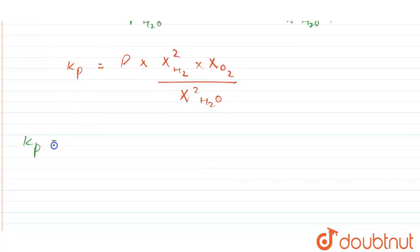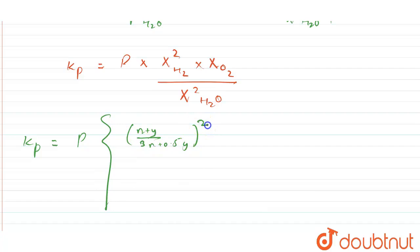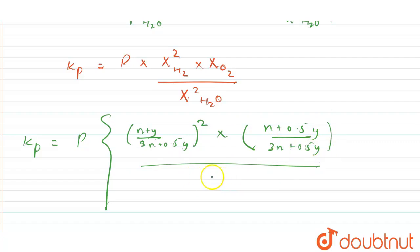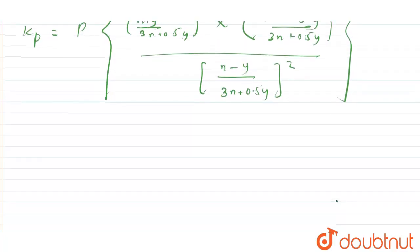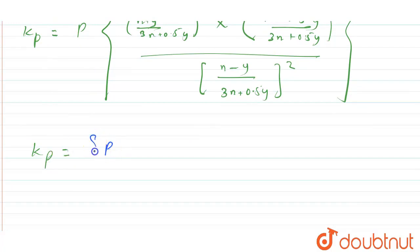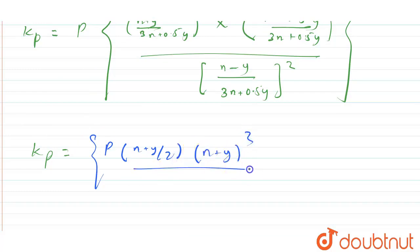Substituting the mole fraction values, taking p as common outside: Kp = p × [(n + y)/(3n + 0.5y)]² × [(n + 0.5y)/(3n + 0.5y)] divided by [(n − y)/(3n + 0.5y)]². After simplification this becomes Kp = p × [(n + y)²(n + 0.5y)] / [(3n + 0.5y) × (n − y)²].